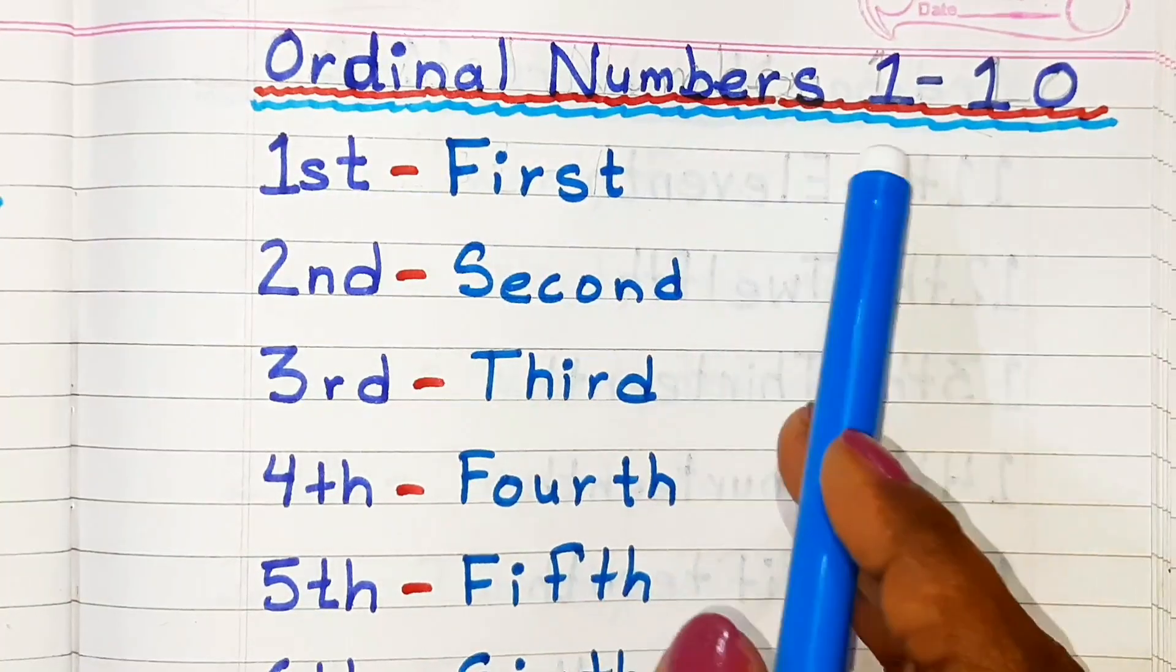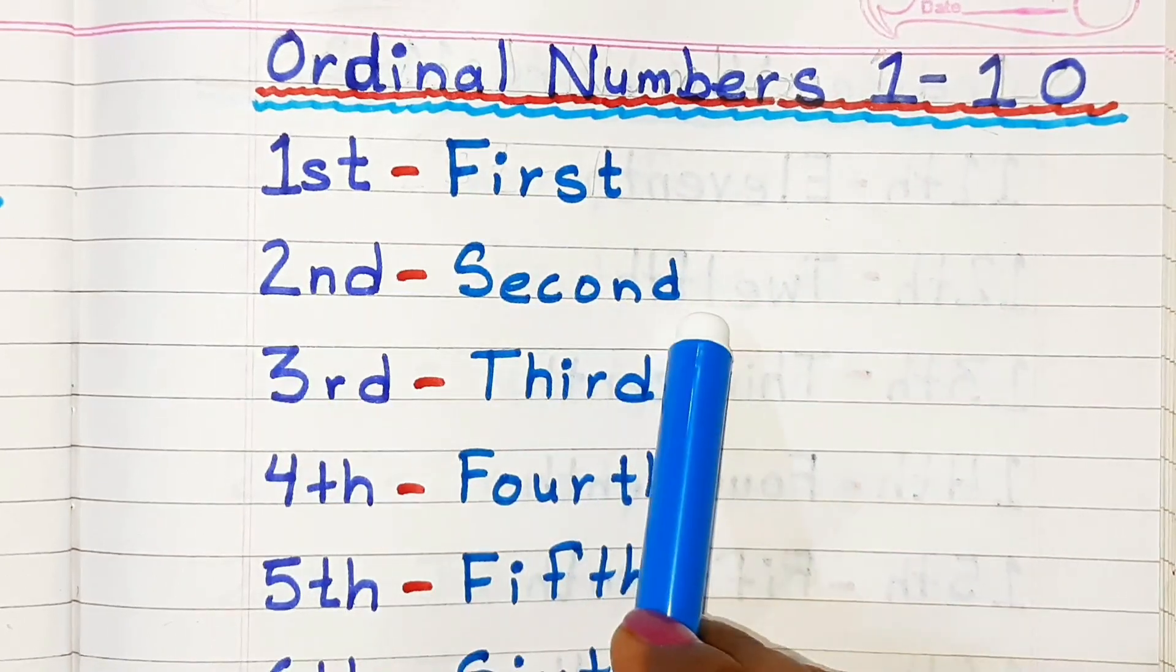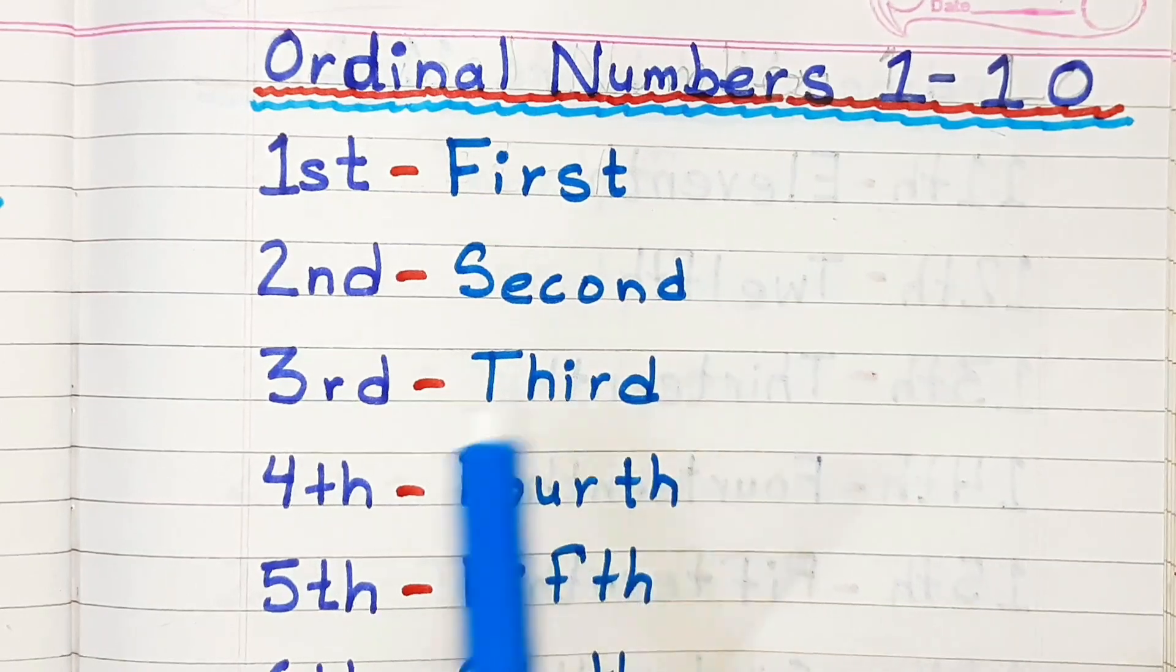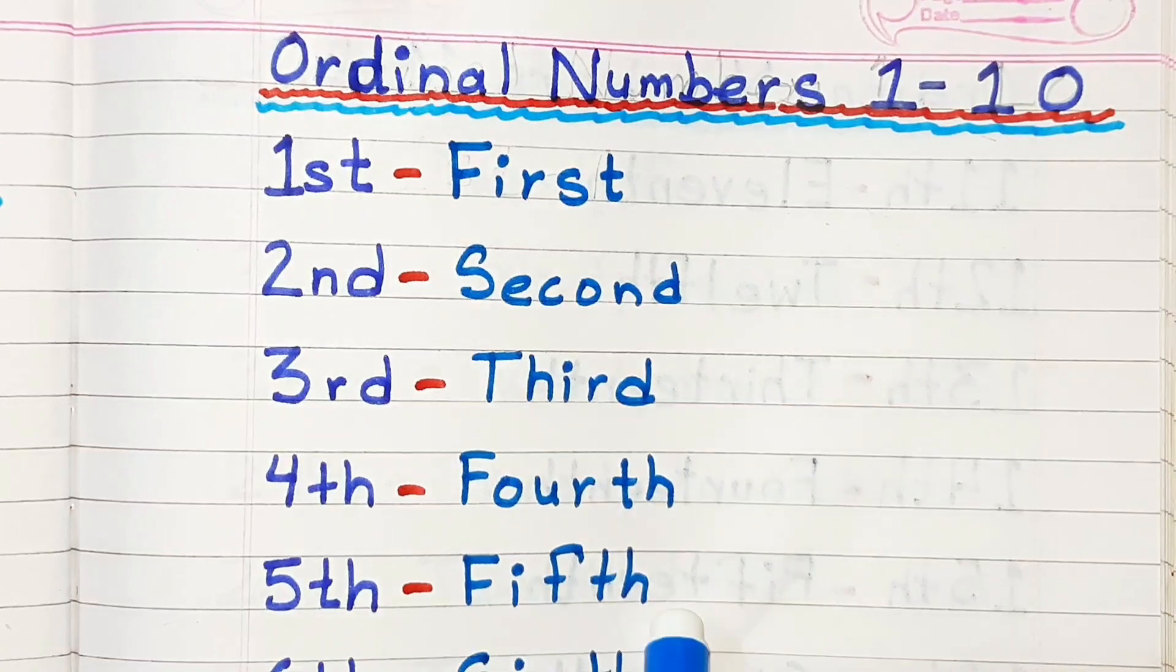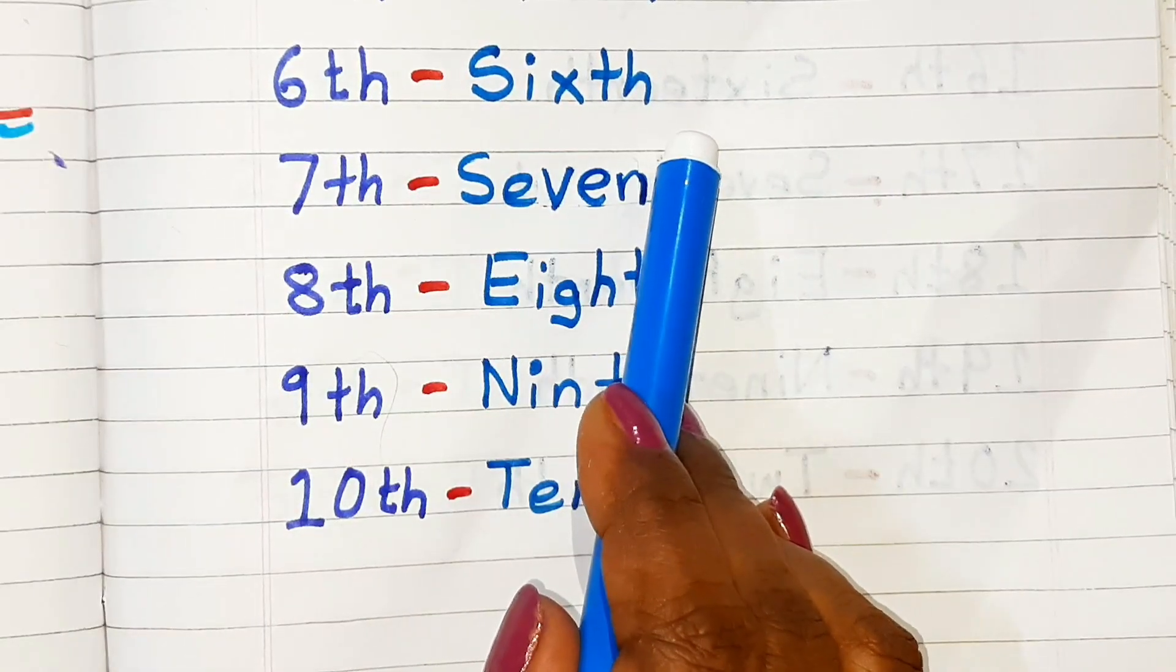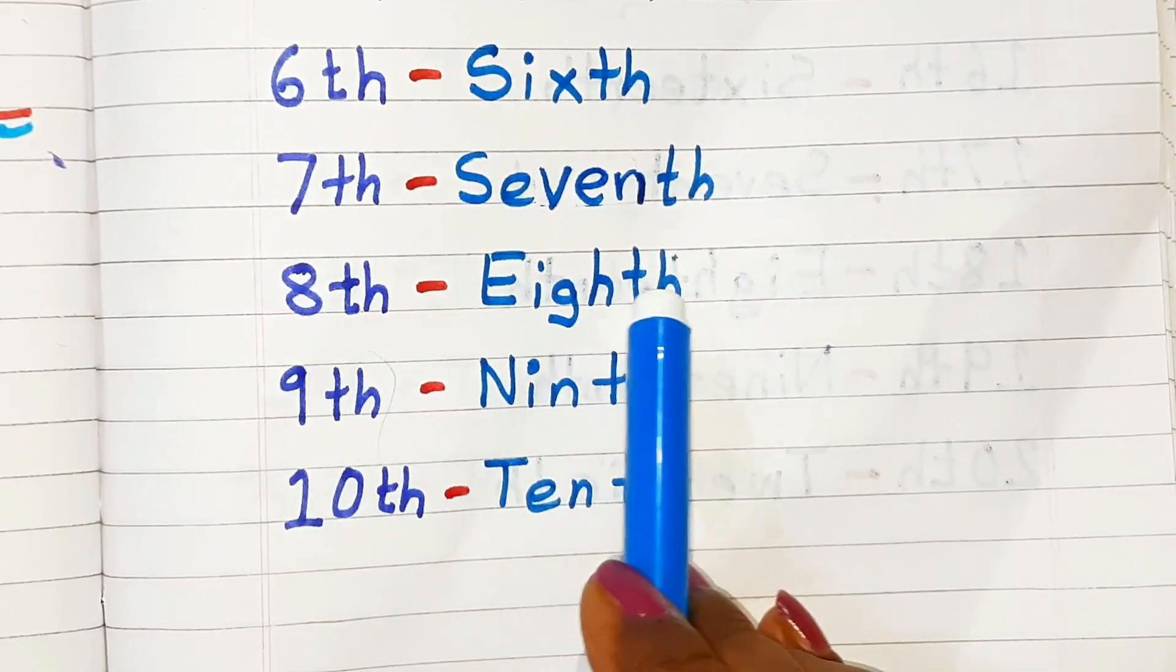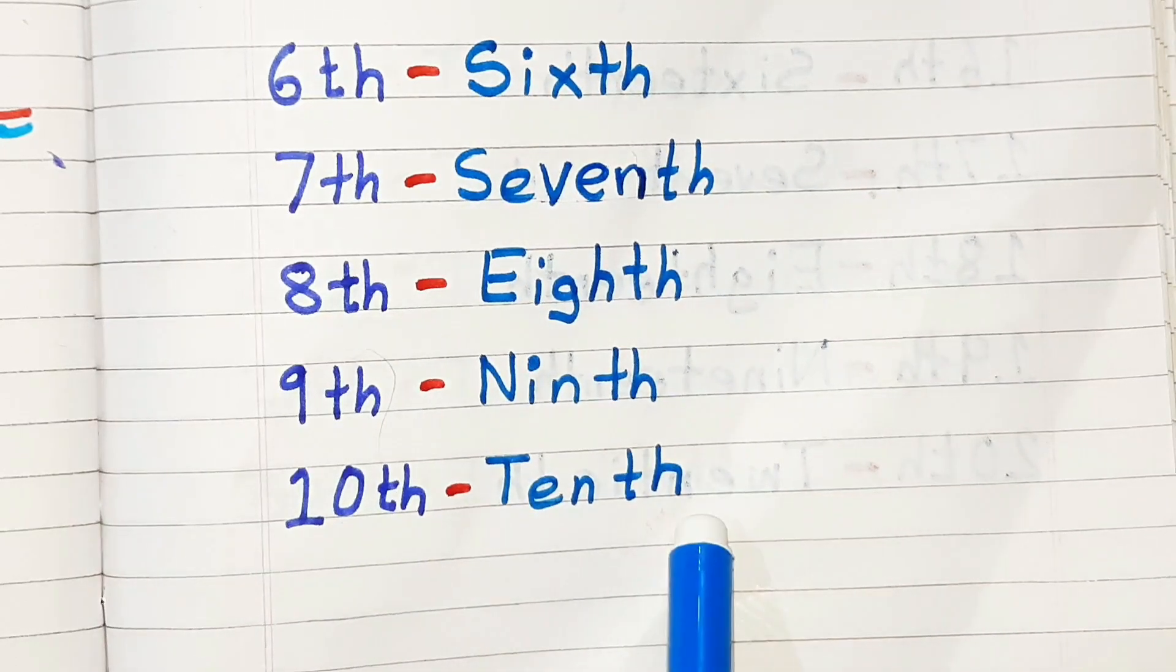Ordinal Numbers 1 to 10: 1st, 2nd, 3rd, 4th, 5th, 6th, 7th, 8th, 9th, 10th.